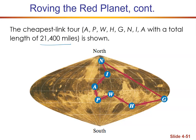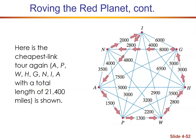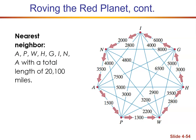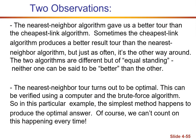That gives us a total optimal weight of 21,400 miles, with the circuit A to P to W to H to G to N to I back to A. What if we were to use the nearest neighbor? Nearest neighbor is the simplest of all, and notice we don't have to do the repetitive one because we know we start at point A. The nearest neighbor gives us a total of 20,100, going all the way around the outside. The nearest neighbor algorithm gave us the better tour than the cheapest link.